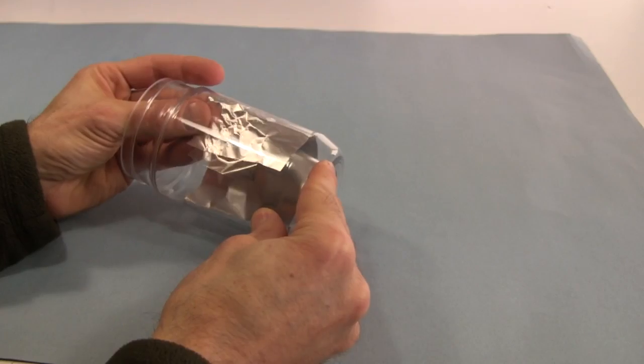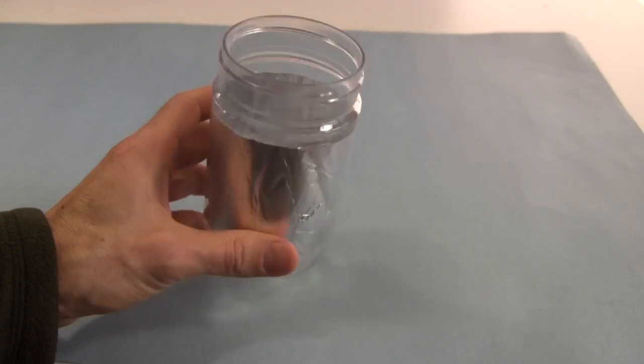It helps if you line the inside of the jar with aluminum foil. Just line it where the electrodes will be facing.